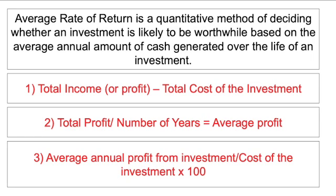Step one is working out the profit after the cost of the investment has been deducted. In OCR, this might be considered total profit, but you still minus the total cost of the investment. Sometimes they won't give you the total profit — they might give you profit for one year and say it'll be the same for five years, so you times it by five, then minus the total cost of the investment. Step two: divide that total profit by the number of years to get your average annual profit. Step three: divide average annual profit by the cost of the investment and times by 100.